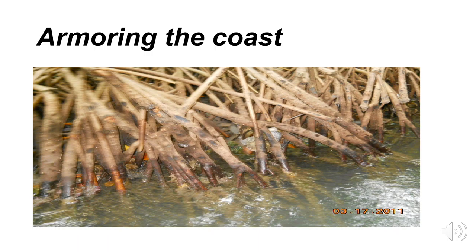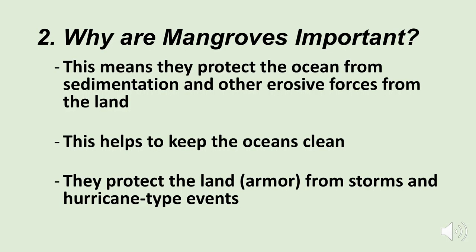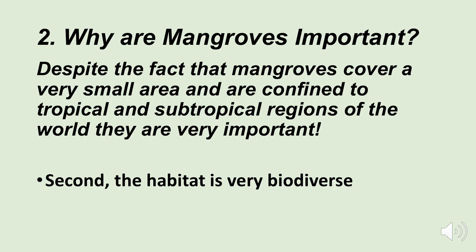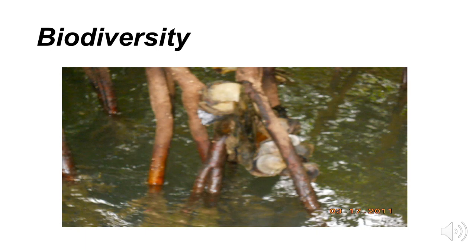Here's some mangrove root systems. You can see the thick roots, and basically these roots armor the coast. Sediments moving toward the ocean slow down, fall out of the water, and the mangroves capture them and make new land. They protect the land and armor it from storms and hurricane-type events. So they're very good for the land and very good for the ocean. Despite covering a very small area confined to tropical and subtropical regions, they are very important and very biologically diverse.